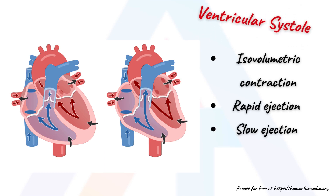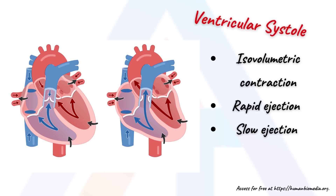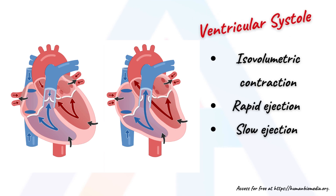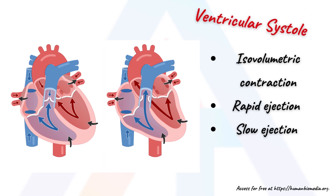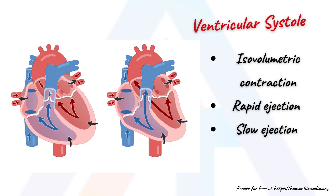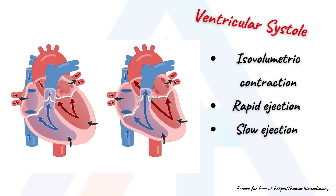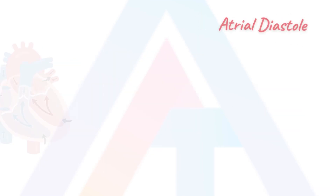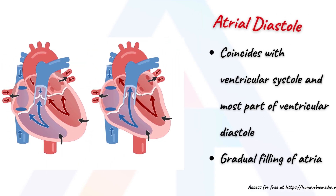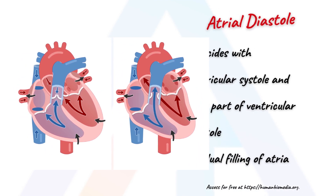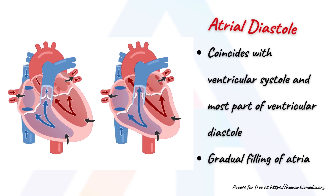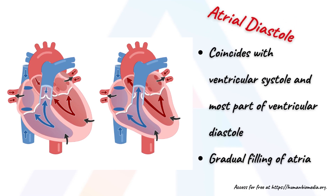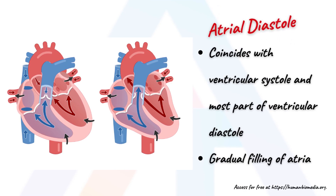Subsequently, ventricular pressure exceeds arterial pressure, thus opening the semilunar valves and allowing blood to be ejected into the arteries. This is the rapid ejection phase, followed by a brief slow ejection phase. The atrial diastole overlaps with ventricular systole in most part of the ventricular diastole and hence is the longest phase of the cardiac cycle. In the early part of this phase, the atrioventricular valves are closed and blood gradually pools in the atria.